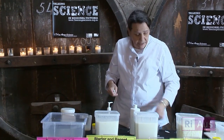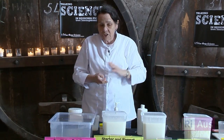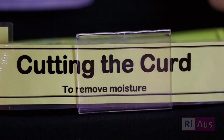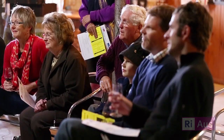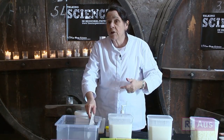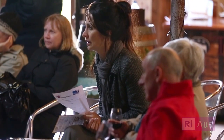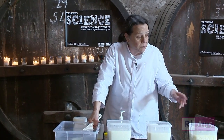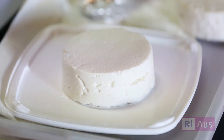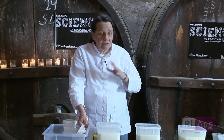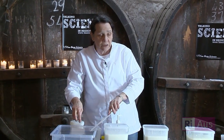We set the timer for half an hour and let it set. Our next job after that is to cut the curd — we'll have a solid mass and we cut the curd to allow moisture to come out. The smaller we cut the curd, the greater the surface area to volume ratio and the more moisture we take out. For camembert we usually cut about two centimetre cubes; for feta, about one and a half centimetres; for cheddar, about 0.8 of a centimetre cube.